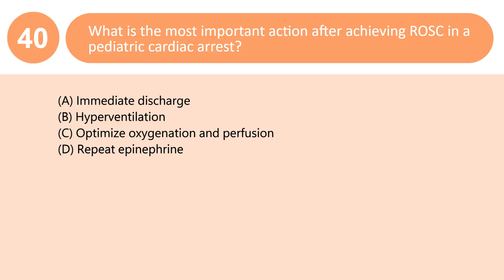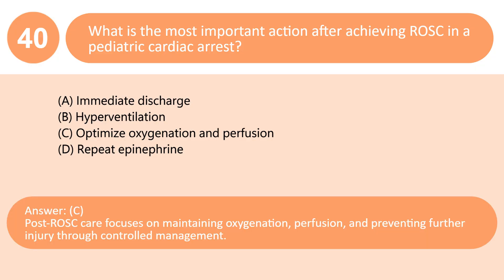What is the most important action after achieving ROSC in a pediatric cardiac arrest? A. Immediate discharge. B. Hyperventilation. C. Optimize oxygenation and perfusion. D. Repeat epinephrine. Answer: C. Post-ROSC care focuses on maintaining oxygenation, perfusion, and preventing further injury through controlled management.